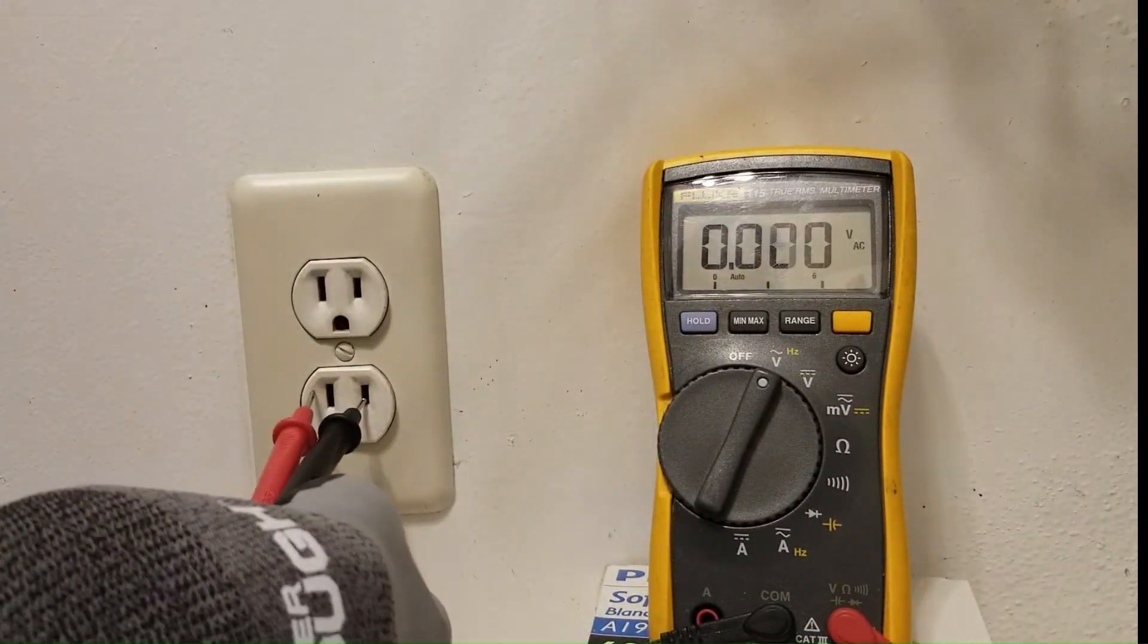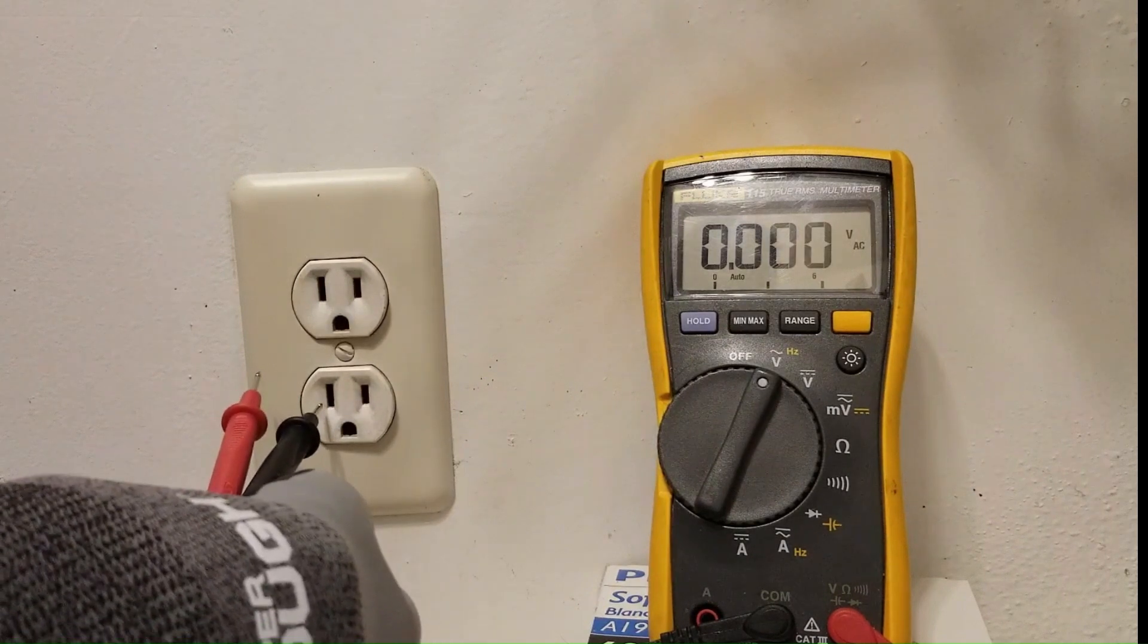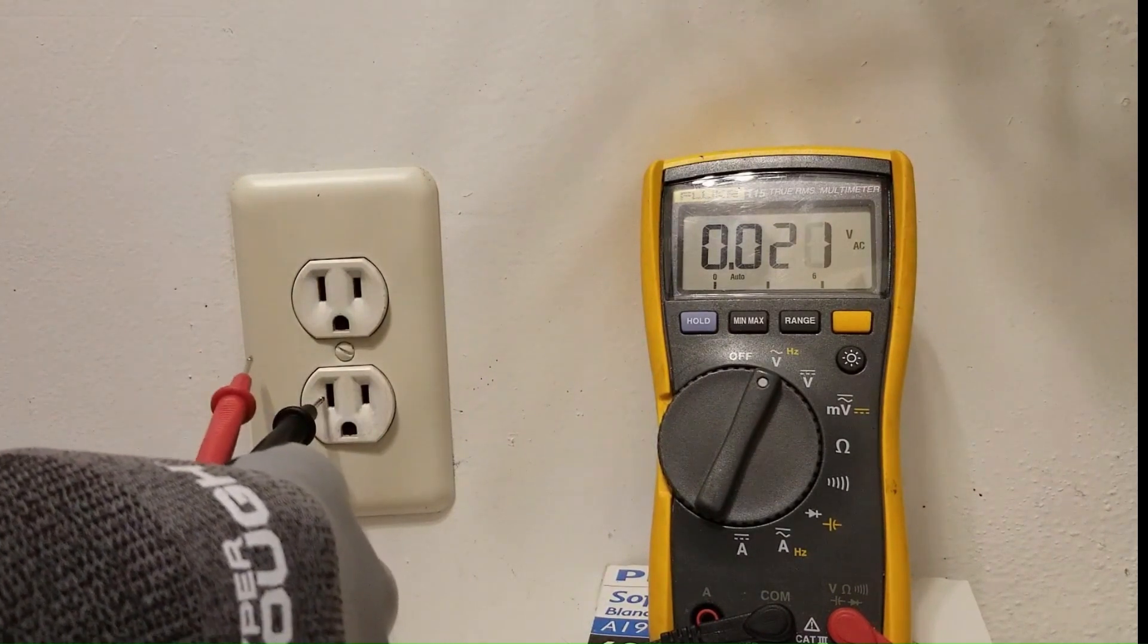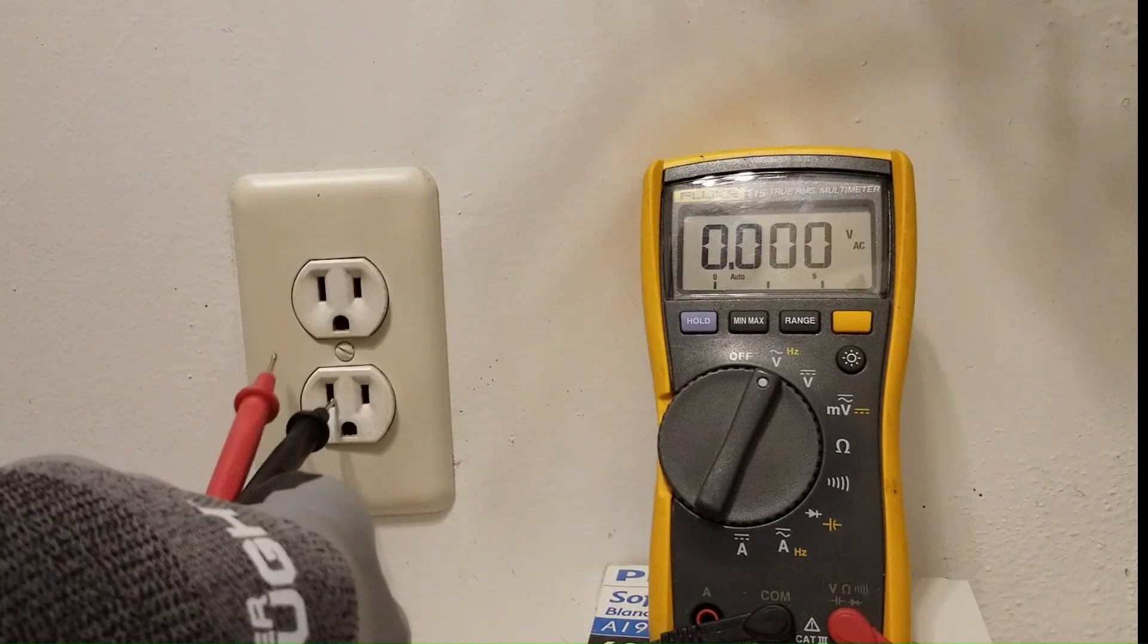So if you only have a couple of volts across here that means that hot is around 120 with respect to ground. That means neutral is around 118 with respect to ground. So neutral is being pulled up because there's a loose upstream connection.